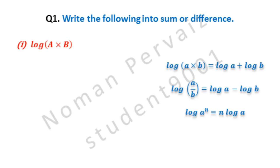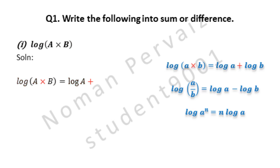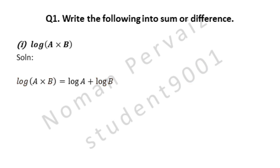Question number 1: write the following into sum or difference. Part 1 is log(A × B). Please note that sum means plus and difference means minus. We are taking the question as it is. First property will be applied: log(A × B) = log A + log B, where the multiplication is converted to plus. Hence, this is our answer.